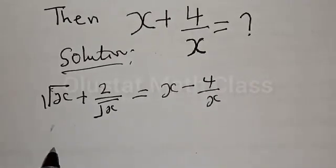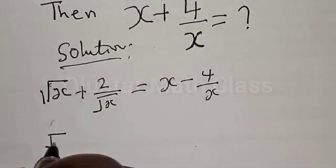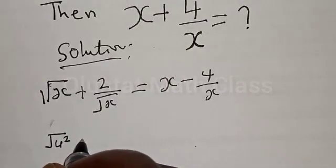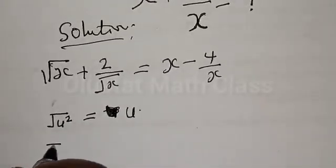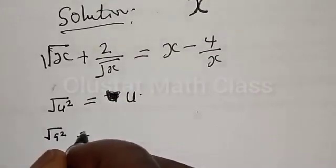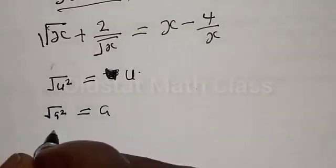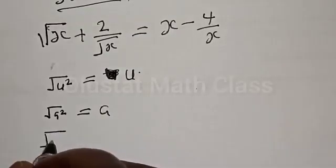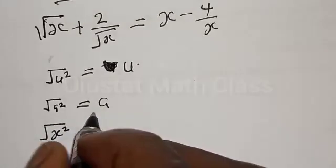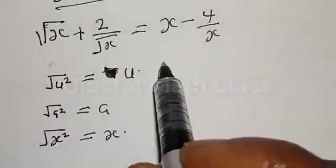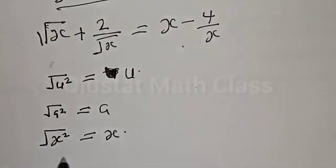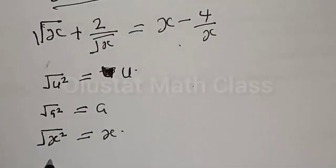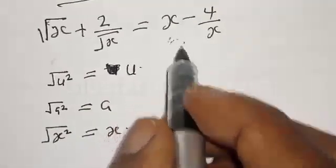We know that square root of u squared is the same thing as u. Also, square root of a squared is equal to a. Then if square root of a squared is the same as x, therefore anywhere you see x from this given equation, substitute with the square root of a squared.